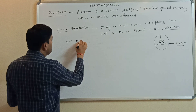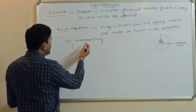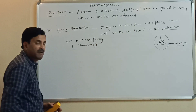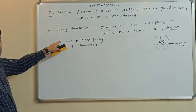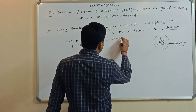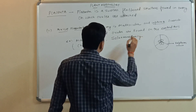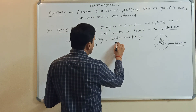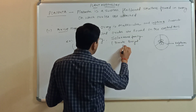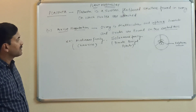The best example of axile placentation is the Malvaceae family, for example China rose. Another example is the Solanaceae family, in which axile placentation is also found. Tomato, brinjal, and potato are all members of the Solanaceae family and they also represent axile placentation.